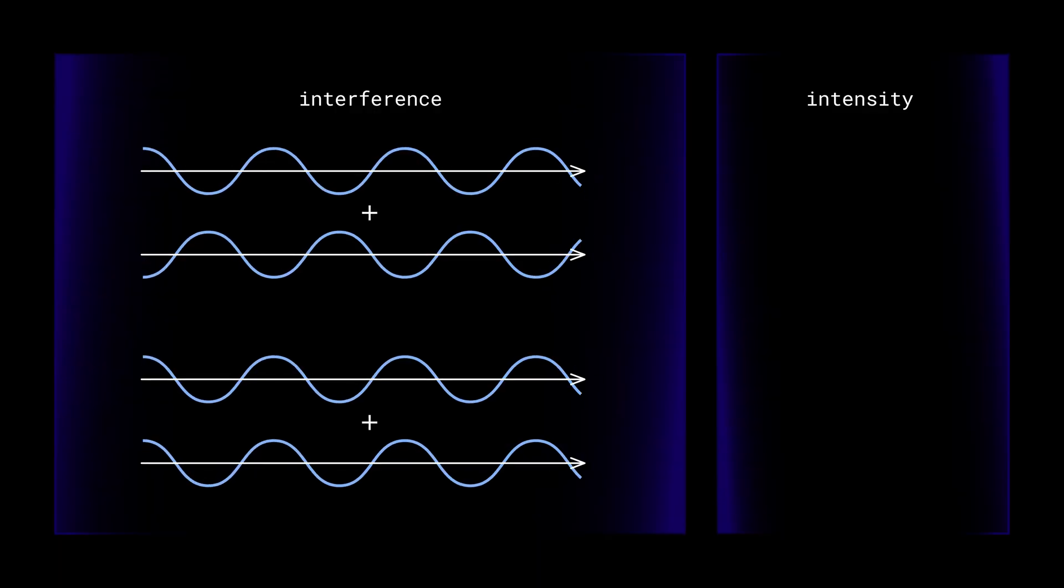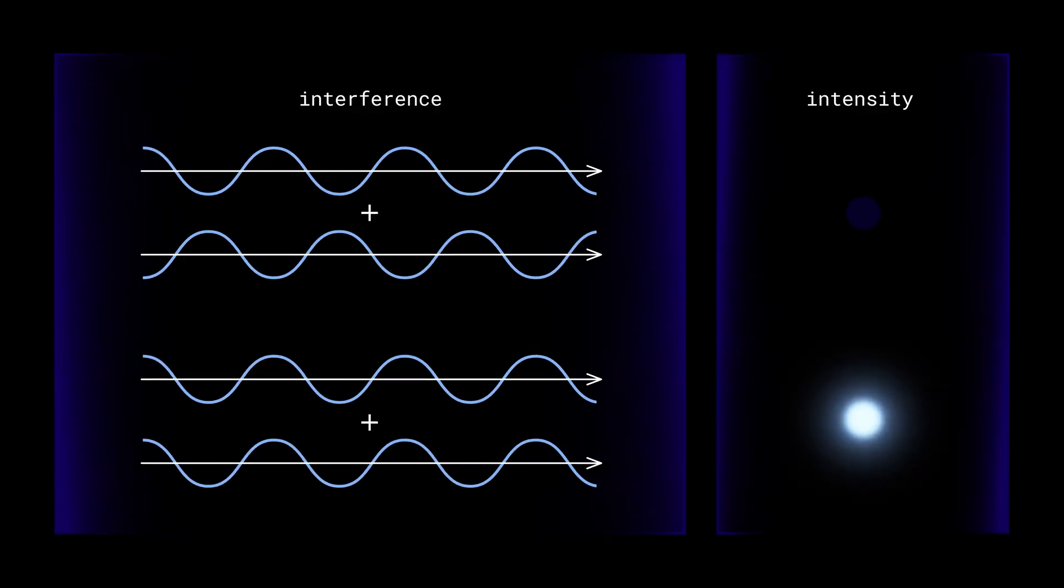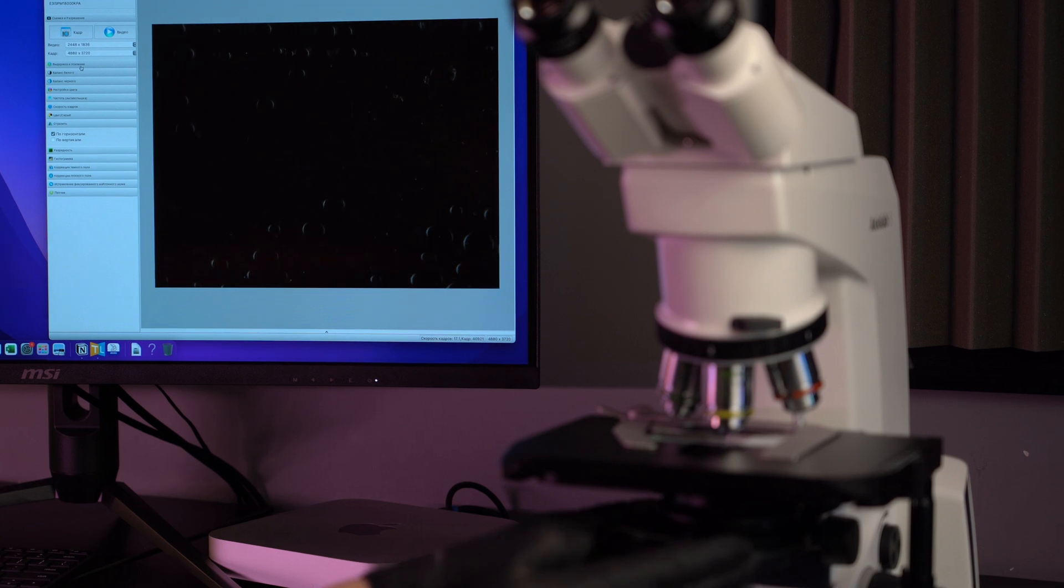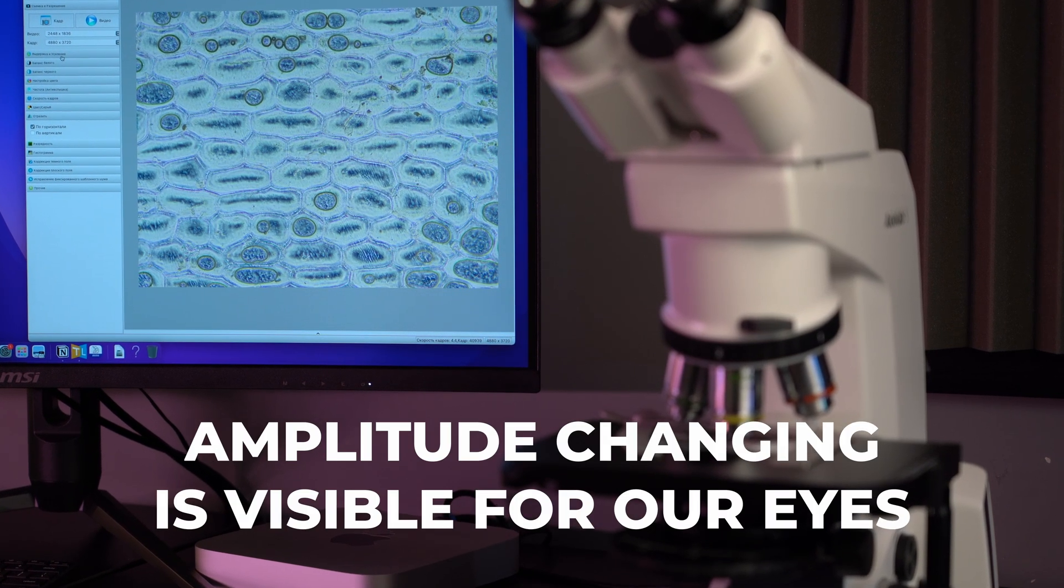Now we can see the amplitude changing based on the interference between these rays. And as we discussed before, amplitude changing is visible for our eyes.